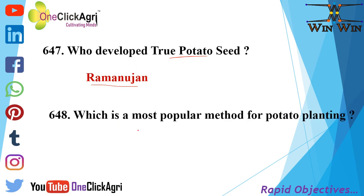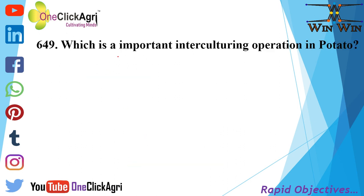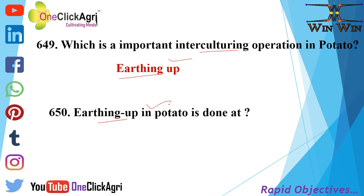The most popular method for potato planting is the ridge and furrow method. The important intercultural operation in potato is earthing up. Earthing up in potato is done at 30 to 45 days after sowing.